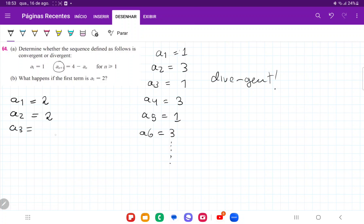And so a3 is going to be 4 minus the previous term, so 4 minus a2, which is 2. a4, once more, is 4 minus the previous term, so 4 minus 2 is 2, and so on and so forth.